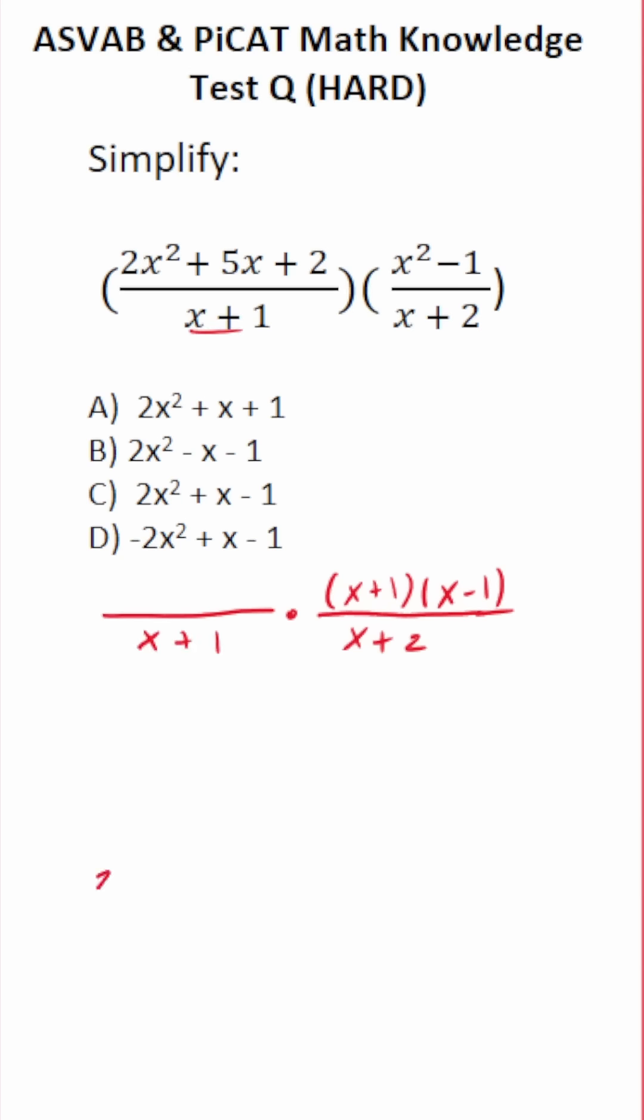But this 2x squared plus 5x plus 2 is something we can factor using the AC method. We're going to multiply 2, which is A, times 2, which is C. 2 times 2 is 4. We're going to identify B. B is 5. Now we're looking for two numbers that multiply to 4 and add to 5, so that's going to be 1 and 4. 1 times 4 is 4, 1 plus 4 is 5. We're going to take 1 and 4 and rewrite this middle term, and then we're going to factor by grouping.